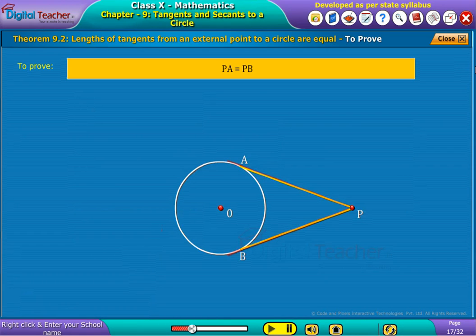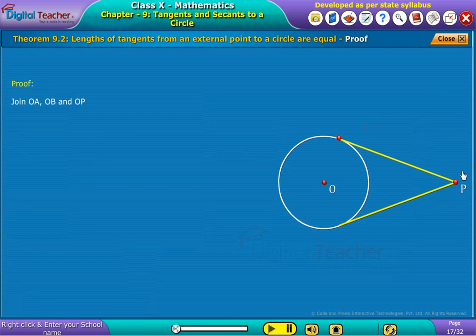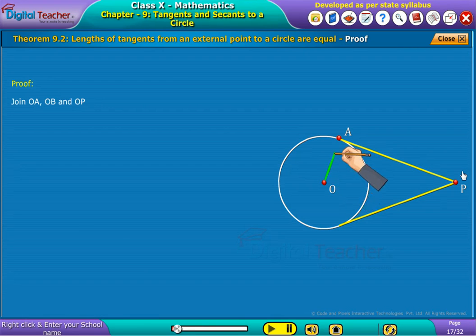We need to prove that PA is equal to PB. Join OA, OB and OP.